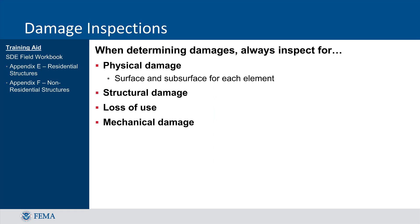As damage assessments begin in the post-disaster period, it is important to keep in mind some simple guidelines for performing substantial damage estimates. There are a few key types of damage to focus on when carrying out any assessment. These include looking for physical damage on both the surface and subsurface of each element, evaluating damage to structural elements that are permanent features of the structure — not portable items like furniture or televisions — determining if there is a loss of use of elements such as HVAC units, and identifying mechanical damage that may affect the normal functions of a structural element.